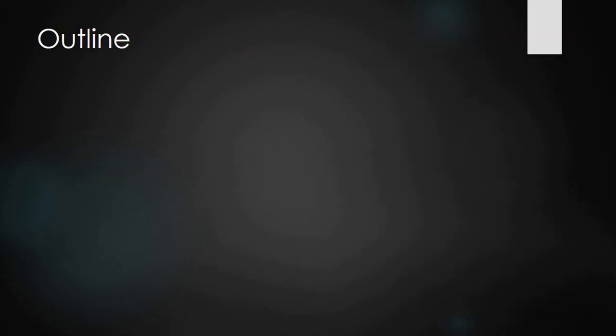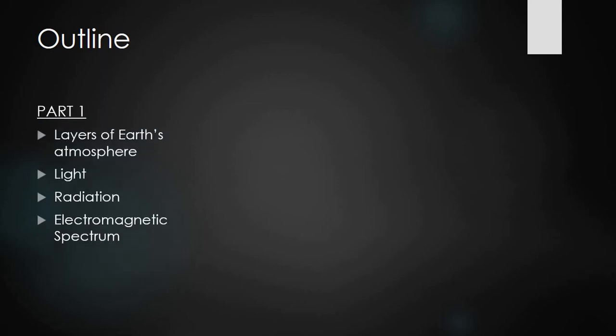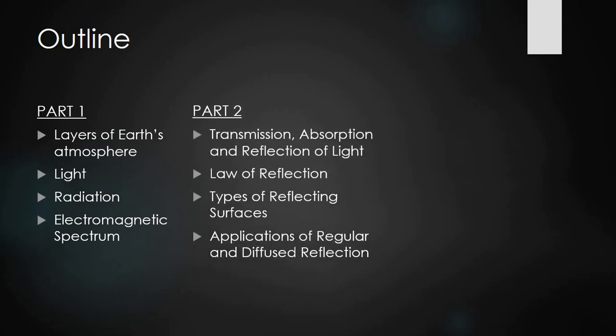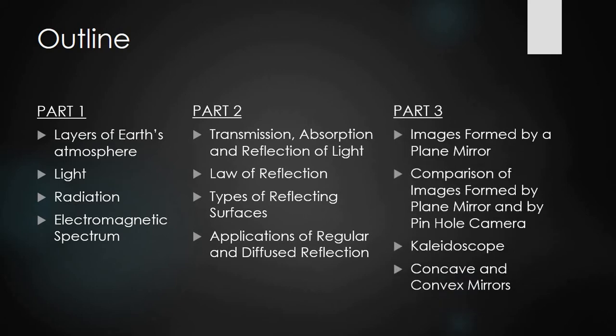This video's outline is as follows. In Part 1, we will study layers of Earth's atmosphere, light, radiation, and the electromagnetic spectrum. To understand light, radiation, or electromagnetic spectrum, it is necessary that we also understand the layers of Earth's atmosphere — that is why I have included this topic in this chapter. Parts 2 and 3 will cover the remaining topics.